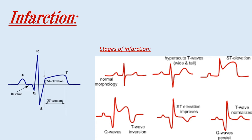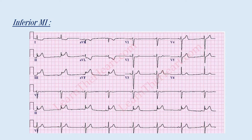One of the most common cases is myocardial infarction, which is characterized by ST elevation. However, there are stages of infarction: starting with hyperacute T wave, then ST elevation which is the most famous, then Q wave and T wave inversion, after that ST elevation improves, and finally you can just see the Q wave with everything else normal. This is an ECG of an inferior MI — we can see the ST elevation in leads 2, 3, and aVF.